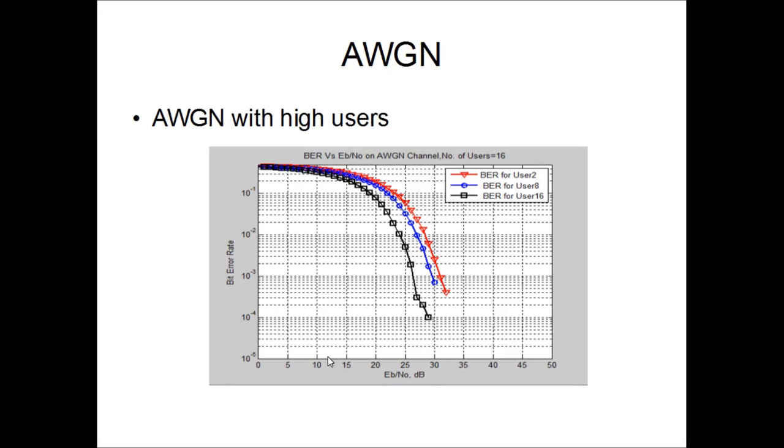One result we can derive from the impairment caused by AWGN channel is there's not much offered distortion in the BER. The bit error rate is gradually constant at 0.08. So there is not much bit error rate offered due to the addition of AWGN channel.